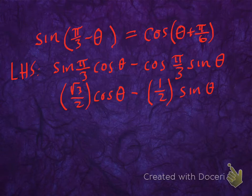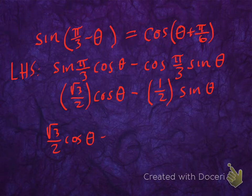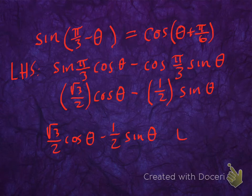So rewriting this: root 3 over 2 cosine theta minus 1 half sine theta. That's the left-hand side of the equation.